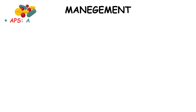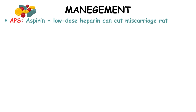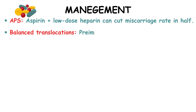The management involves specific interventions tailored to the underlying causes. For antiphospholipid syndrome, a combination of aspirin and low-dose heparin has shown efficacy in reducing the miscarriage rate by half.